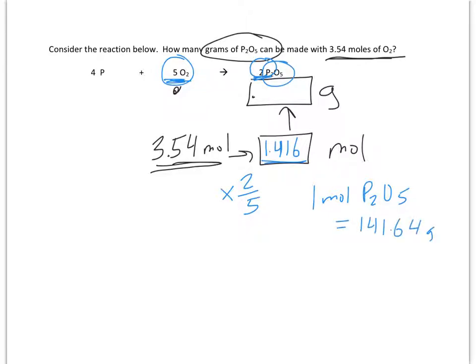So 1 mole is about 140 grams. So what's 1.4 moles? So that means there's 141.64 grams per mole. So I'll multiply that times 1.416, and I get about 200.99 grams.